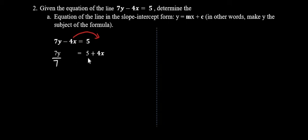However, what we do to one side, we want to do to the other side as well. So we're going to divide this side by 7. Rather than dividing the entire side by 7, we can just divide each term by 7, which says the same thing. So we have 5 over 7 and positive 4x over 7.